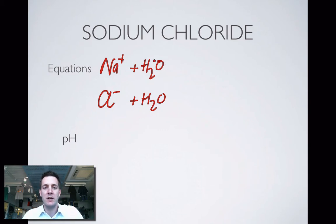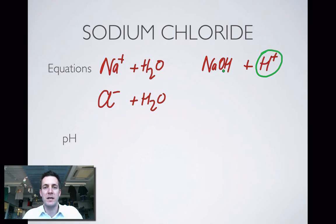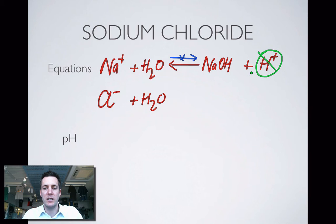Sodium is a positive ion. There's a negative OH minus ion in water, so perhaps it would join with sodium to form sodium hydroxide, leaving H plus behind. If that reaction happened, we'd have H plus in solution making it acidic. However, we have a strong base here, and strong bases react in a one-way fashion. Any products would just react back into the starting materials, so this forward reaction doesn't really happen. We don't produce H plus ions as a result of sodium reacting with water, so we don't bother writing this hydrolysis equation.